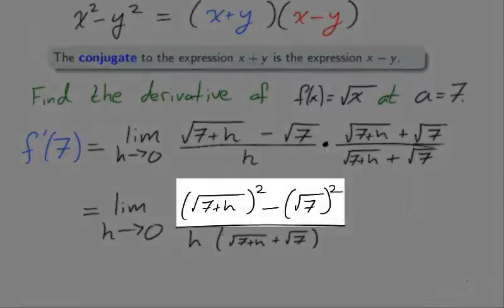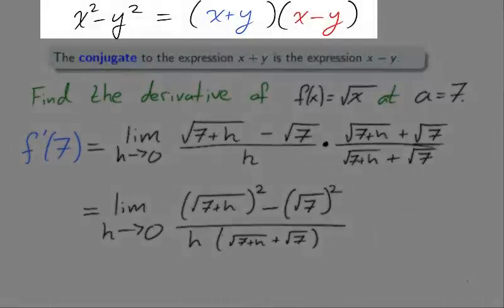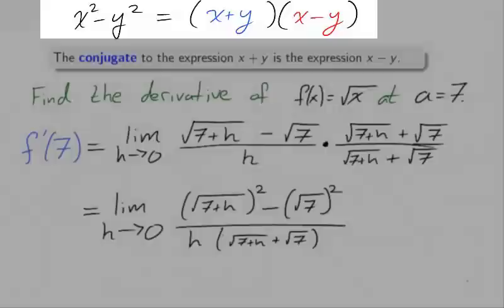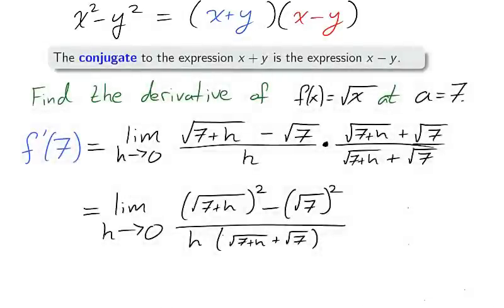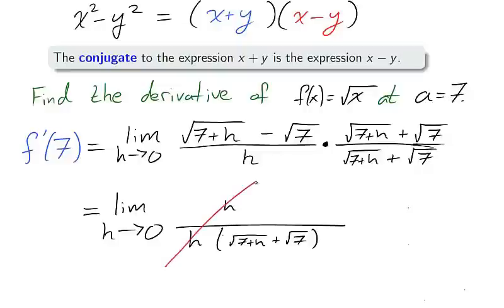We use the conjugate property in the numerator. Remember that the conjugates form a twin to the factorization of the difference of squares. And we leave the denominator undisturbed. Because the square and the square root cancel each other out, we are left with 7 plus h minus 7. Cleaning up the numerator with arithmetic, we're left with h in the numerator and h in the denominator, which we cancel.